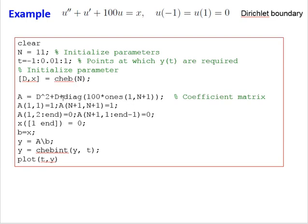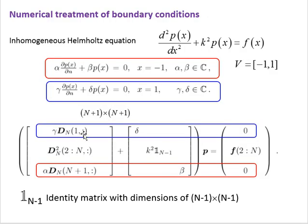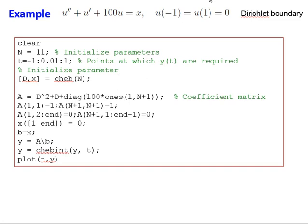Now we apply the boundary conditions. The first row corresponds to X = 1, where U(1) = 0, so A(1,1) = 1, which is the coefficient of U(1). The last row has A(N+1, N+1) = 1, the coefficient of U(-1). All other elements in these two rows are set to zero, and the right-hand side values at boundaries 1 and N+1 are set to 0.